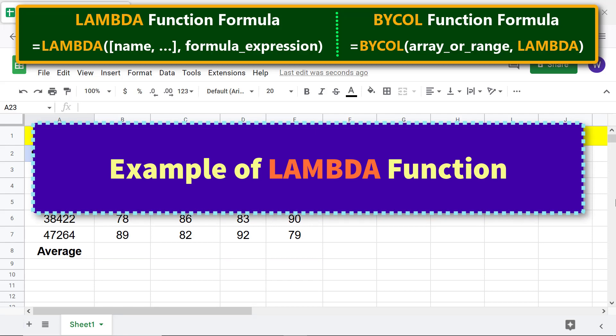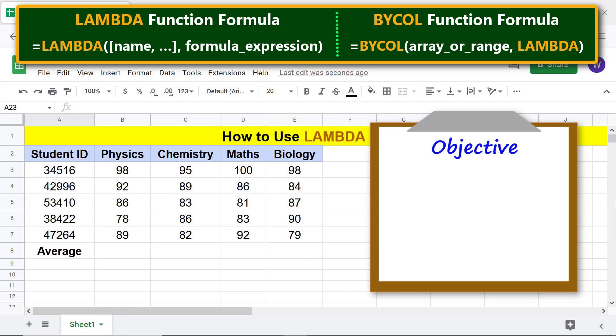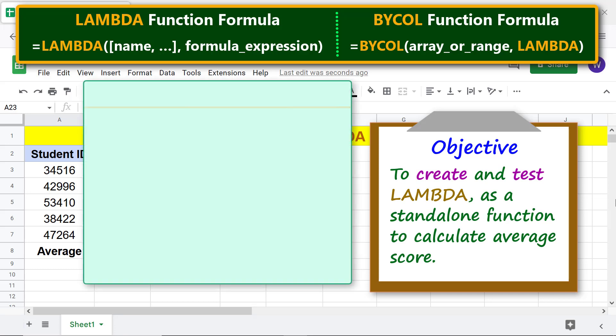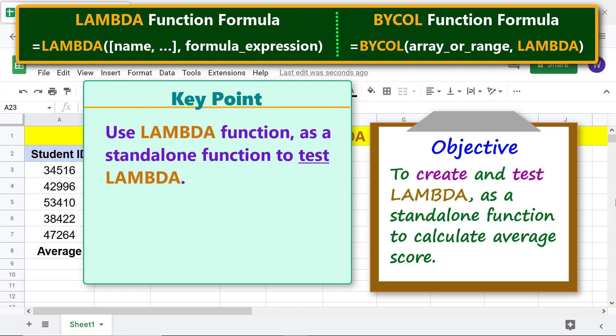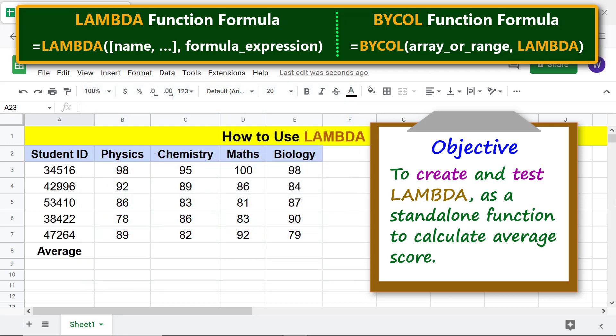Example of LAMBDA function. Here is the objective of using LAMBDA: to create and test LAMBDA as a standalone function to calculate average score. Use LAMBDA function as a standalone function to test LAMBDA. After testing LAMBDA, it can be used, for example, in a BYCOL function. All right, consider this data. Let's calculate the average score on physics using the average function.